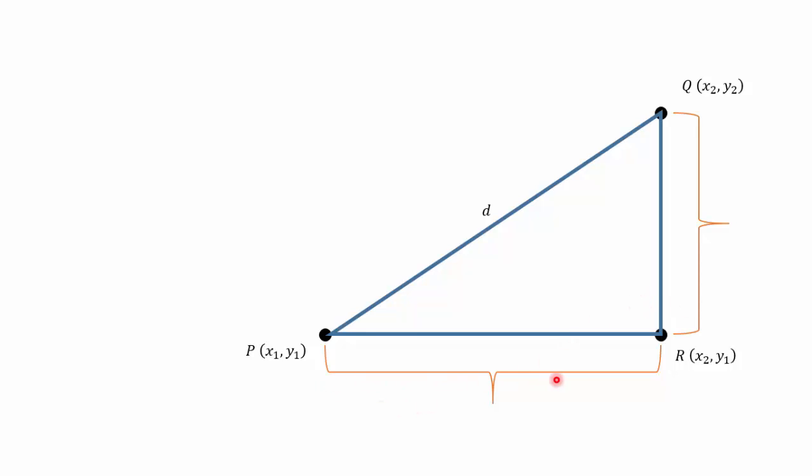Well, the horizontal distance is just the distance between the x-coordinates, so x2 minus x1. And the vertical distance is the difference between the y-coordinates, which is y2 minus y1.